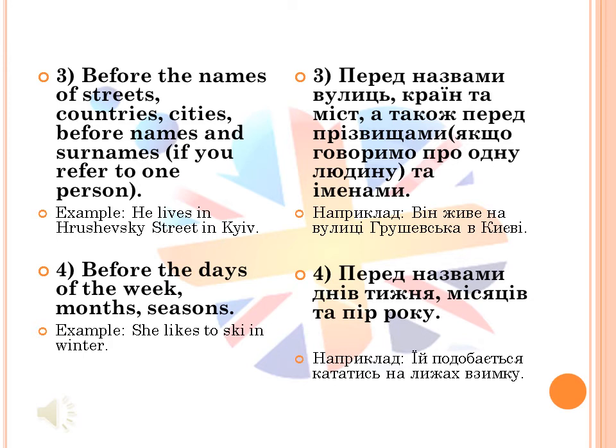We use zero article before the days of the week, months, or seasons. For example: 'She likes to ski in winter.'